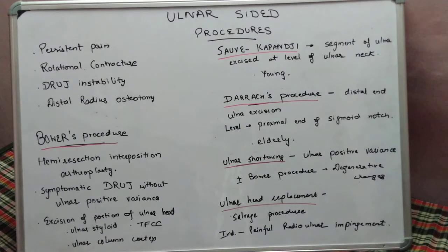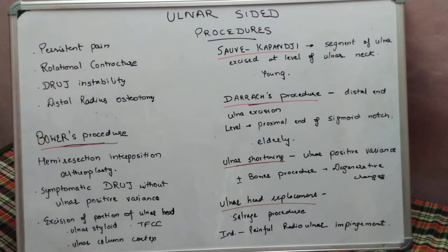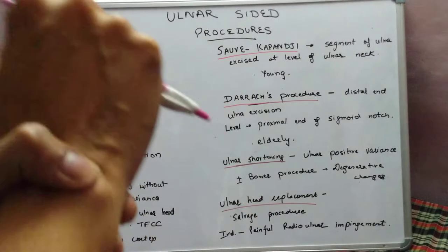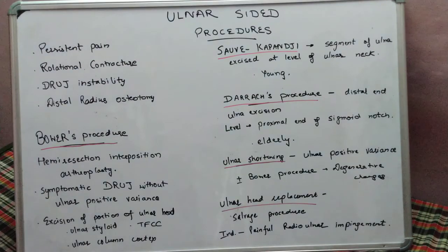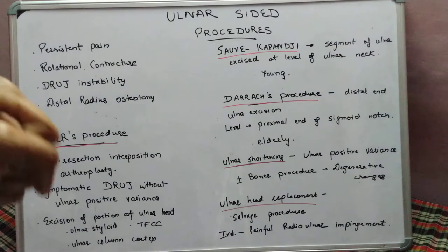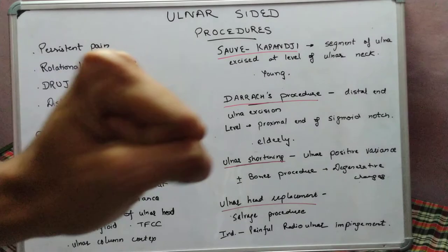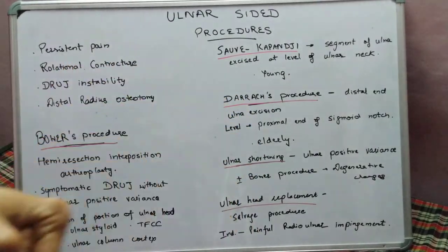After covering the TFCC injuries in the previous video, in this video we will study the various ulnar-sided procedures that are indicated. The first indication is persistent pain of the DRUJ. Second is rotational contracture, where the patient is not able to perform rotational movement at the wrist joint.